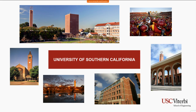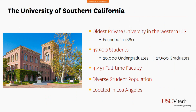For those who haven't been to USC's campus here in beautiful Southern California, USC is the oldest private university in the Western United States, founded way back in 1880. Currently we have over 47,000 students. Our graduate students actually outnumber the undergraduate population at over 27,000 students. We have over 4,400 full-time faculty members, not including guest lecturers and adjuncts from a variety of different industries.